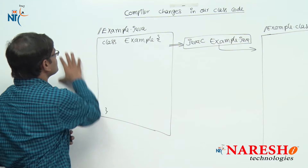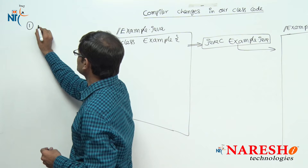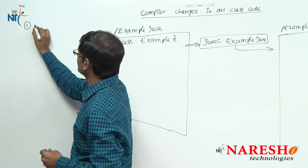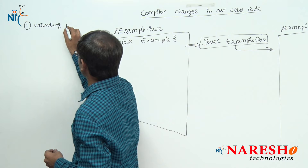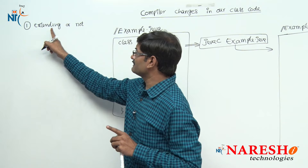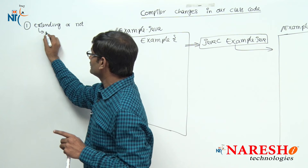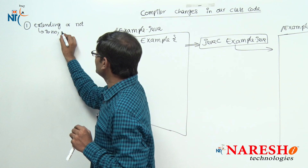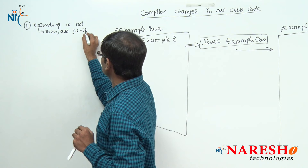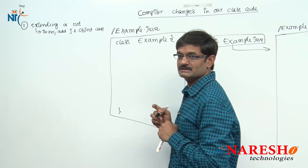Whenever I type javac example.java, we get example.class. In this example.class file, the compiler software is doing some changes. Now I want to list out whatever changes it is doing. First, it will check: is our class extending from any other class or not?